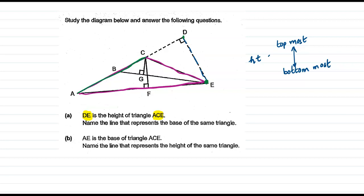So we can see that AC represents all the bottom most points, the base points of the triangle ACE, and E represents the topmost point. So a perpendicular dropped from E to a line extended from AC is the height, which means AC is the base.